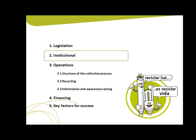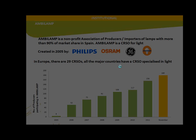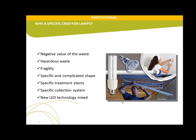What is Ambilamp and how is it organized? Ambilamp is a non-profit CRSO comprising importers and producers with more than 90 percent market share in Spain. It was created by Philips, OSRAM, General Electric, and Sylvania, like other CRSOs in Europe. We started with four producers in 2005, and as of November this year we have 180 producers and importers. The question when we decided to launch a specialized CRSO for lamps was: why not mix lamps with TVs or refrigerators? The answer relates to the negative value of the waste, the fragility of the product, the specific and complicated shape, the need for specific treatment plants, and because new LED lamp shapes are now very similar to non-LED ones and need specific solutions.